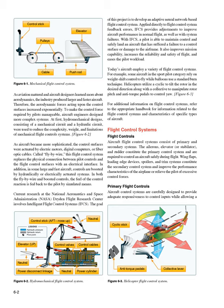Aircraft flight control systems consist of primary and secondary systems. The ailerons, elevator or stabilator, and rudder constitute the primary control system and are required for safe flight. Wing flaps, leading-edge devices, spoilers, and trim systems constitute the secondary control system and improve the aircraft's performance characteristics or relieve the pilot of excessive control forces.